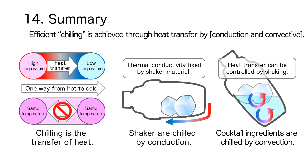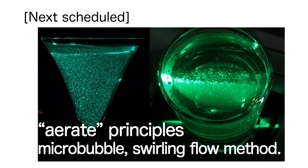In this video, the principle of chilling was explained: chilling is the transfer of heat from the hot side to the cold side. Shakers, which are solids, are chilled by conduction, and cocktail ingredients, which are liquids, are chilled by convection. Thermal conductivity is fixed by the material of the shaker, but the heat transfer coefficient can be controlled by shake technique. The next video will cover aerate principles, microbubbles, and the swirling flow method, including experiments with ultrasound microbubble generation and laser light sheet photography.